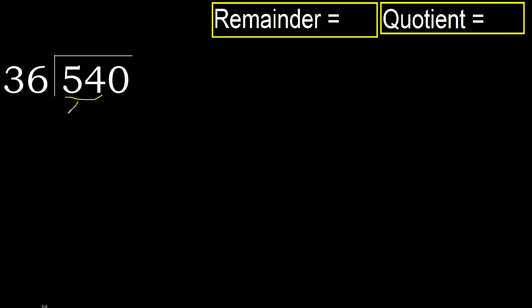54 is not less, therefore work with 54. 36 multiplied by which number is nearest to 54 but not greater? 36 multiplied by 2 is 72, which is greater. Multiplied by 1 is 36, it's not greater, okay.